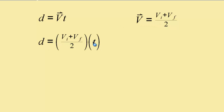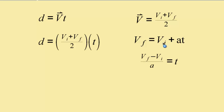Now I'm going to work with t. From an earlier equation, the final velocity of an object equals initial velocity plus acceleration times time. If we manipulate this equation to isolate t, we subtract vi from both sides — giving us vf minus vi — then divide by a. So time equals final velocity minus initial velocity divided by acceleration.